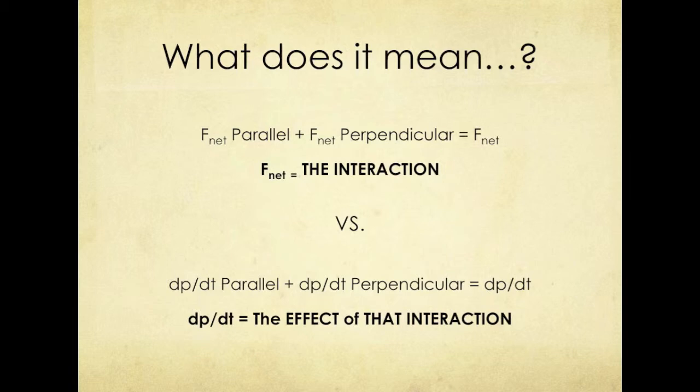Now, onward to answering what does it mean. What is the difference between the net force and dp/dt, let alone their parallel and perpendicular components? Well, the net force is the interaction and dp/dt, the change of momentum over the change of time, is the effect of that interaction. The net force is the overarching idea, while dp/dt includes the data summed up to become that overarching idea. To be more specific, there is no way for them to be exactly the same, for they have different units. dp/dt has units of kilograms times meters per second, while newtons of the net force are equal to kilograms times meters per second squared.